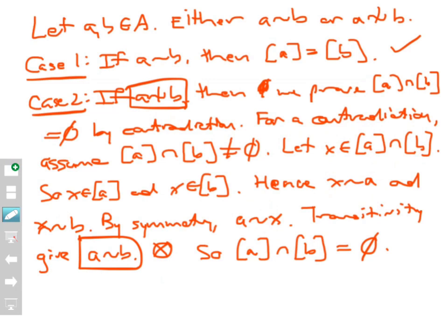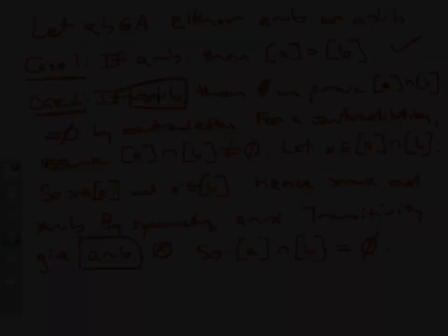That proves that in any case — whether the two points are related or not, covering all possible cases — the equivalence classes are either equal or disjoint. That ends the proof of all three propositions. These propositions will come up in the next video and in the future, so they're important. Make sure you master the flow of the argument and the proofs. Thanks.